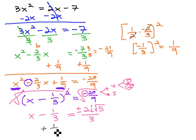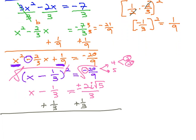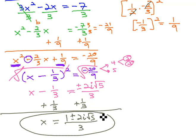Finally, get the x alone by adding 1 third to both sides. Let me scroll to buy me some space. x equals, we have a common denominator of 3 on both, and in the numerator, 1 plus or minus 2i root 5 for our solution.